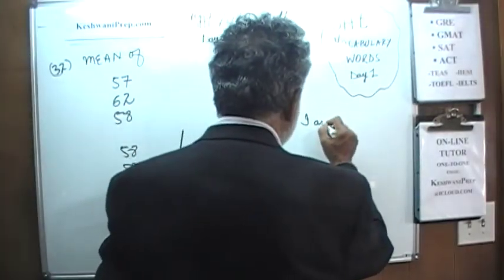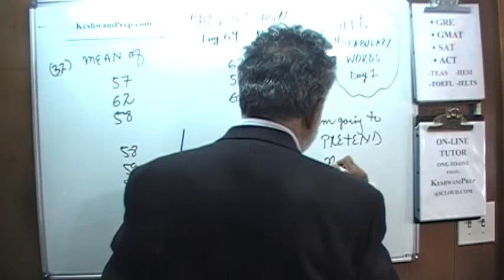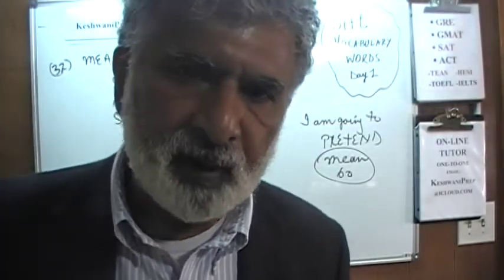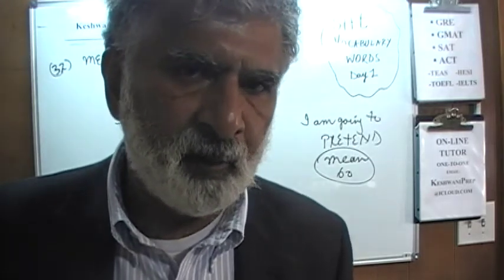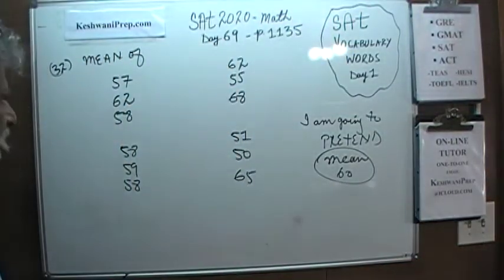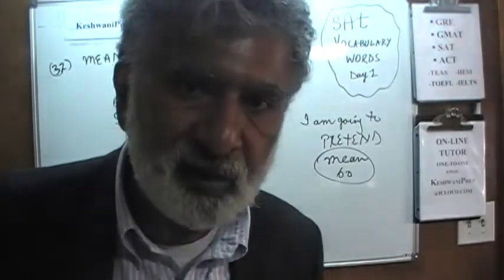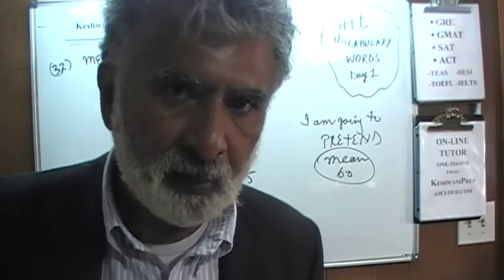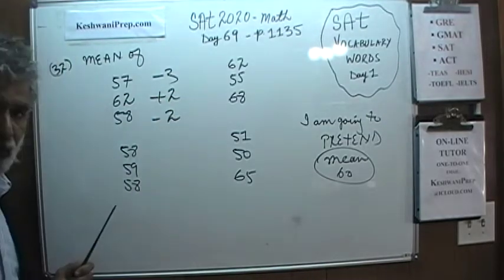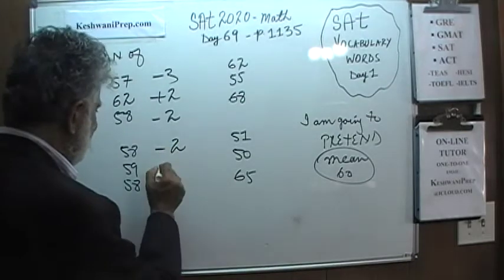I am going to pretend that the mean is 60. I do not know exactly what the mean is obviously. We are going to pretend it is 60. We are going to figure out how much deficit we have or how much surplus we have. We will adjust accordingly the value of 60 and we will figure out the exact mean. So the mean is 60. In other words, if all of these 12 entries were exactly 60, the mean would have been exactly 60. But they are not obviously. So we have to adjust for them.